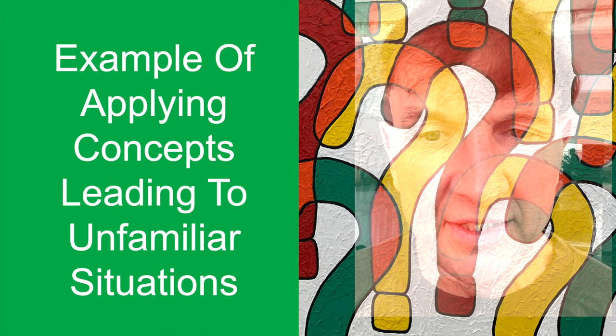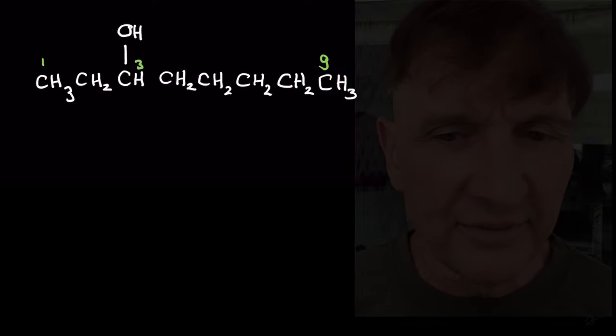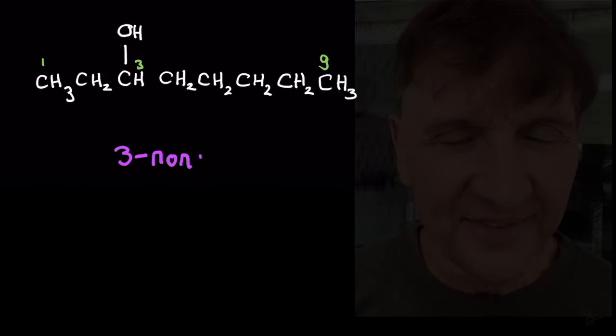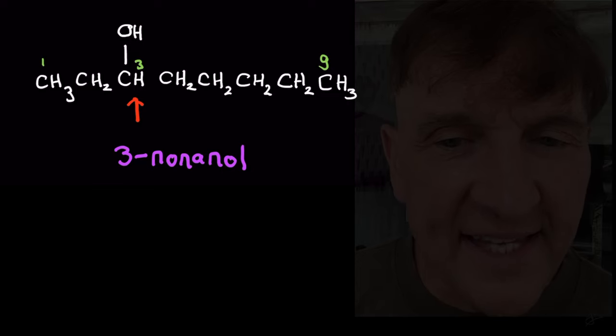Now let's add another concept from the Lego bricks video. Suppose we have a nine-carbon chain but instead of putting the OH group on the end, we count three carbons in and put it on the third carbon. That's going to be a nonanol — specifically three-nonanol. And don't forget the valency of carbon being four in the neutral state: we can't attach OH to a CH2; it can only be attached to a CH or similar group. So we can figure out the structure of three-nonanol from the concepts, even if we'd never seen it before. Once you get the feel for concepts, you can extrapolate even more.